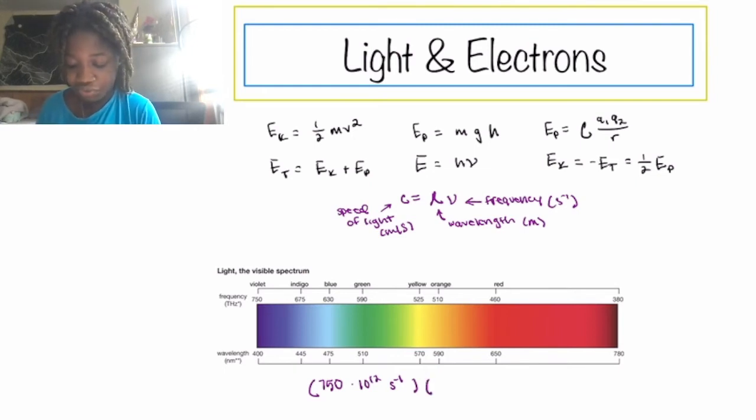I'm going to convert units of length from nanometer to meter. And so that will be 400 times 10 to the negative 9 meters. And when you multiply this together,